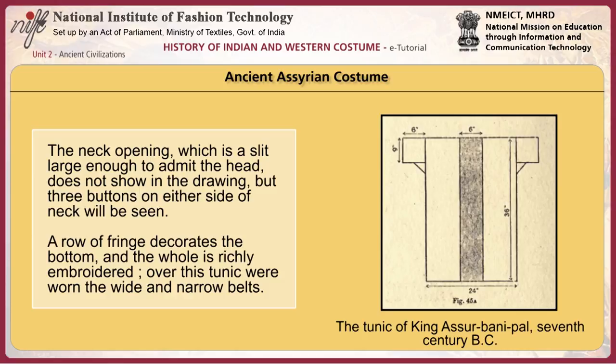This is the tunic of King Assurbanipal, 7th century BCE. The neck opening, which is a slit large enough to admit the head, does not show in the drawing, but three buttons on either side of the neck will be seen. A row of fringe decorates the bottom and the whole is richly embroidered. Over this tunic were worn the wide and narrow belts.